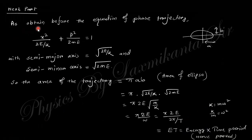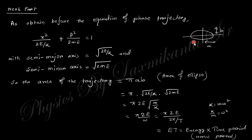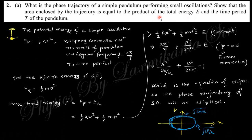From the elliptical equation obtained, the semi-major axis is √(2E/k) and the semi-minor axis follows similarly. The area of an ellipse is π·a·b, where a and b are the semi-major and semi-minor axes. Substituting and using ω = 2π/T, the 2π terms cancel and you get the area = E·T, which is total energy multiplied by time period — as required.